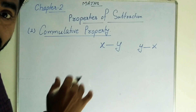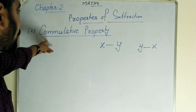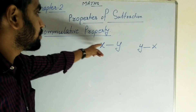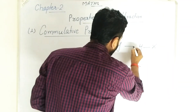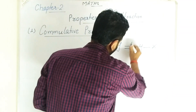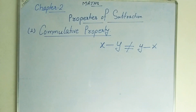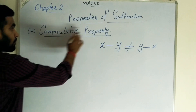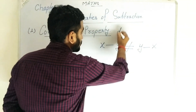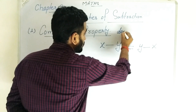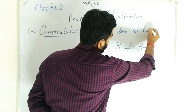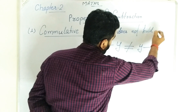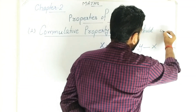Are they equal? If both are equal, then the commutative property holds in subtraction. But we know that these are not equal.